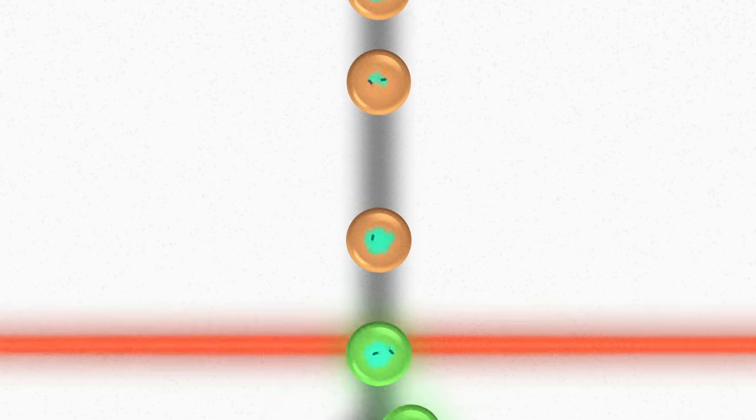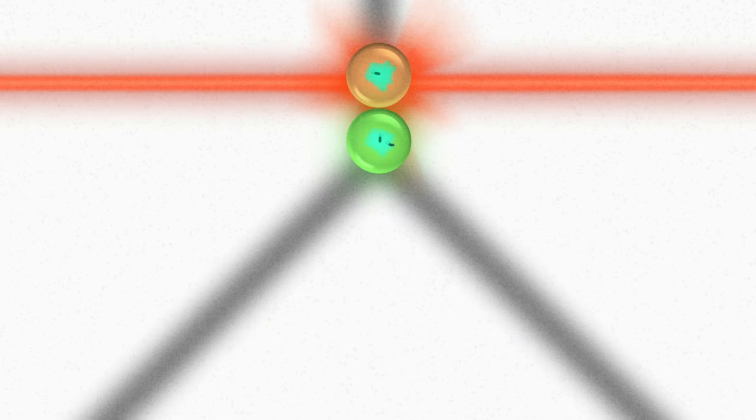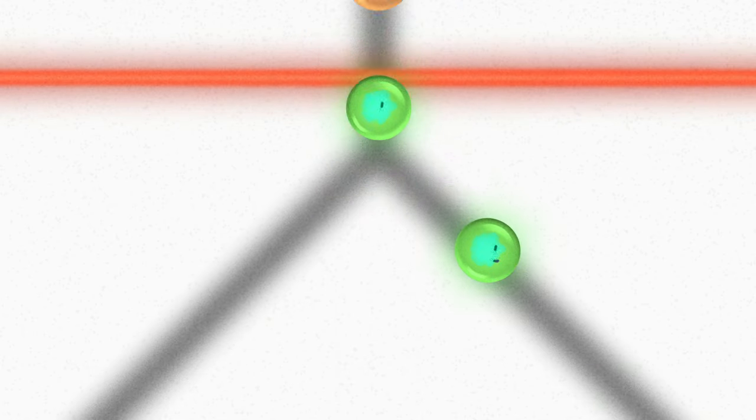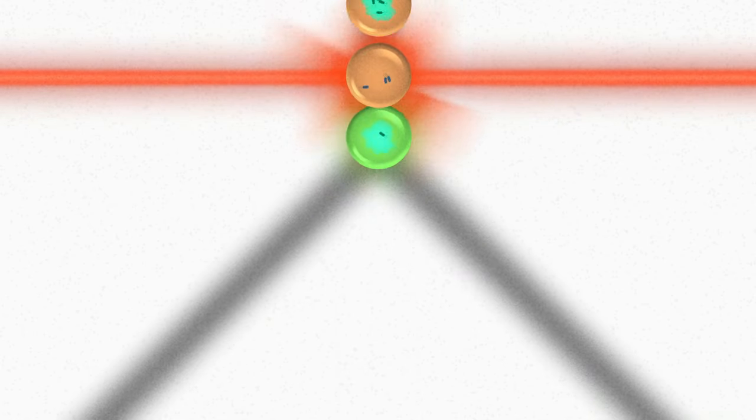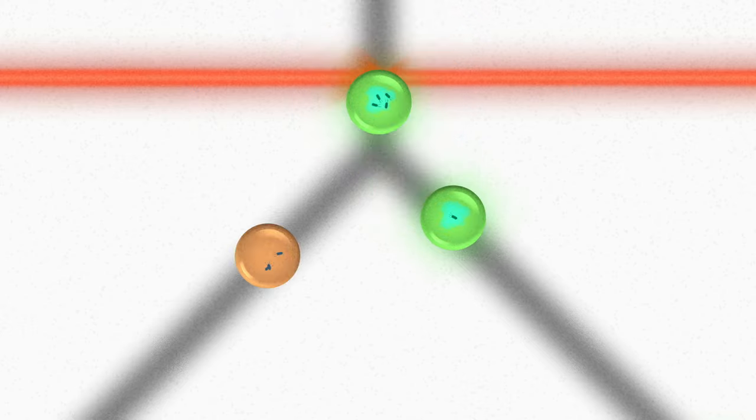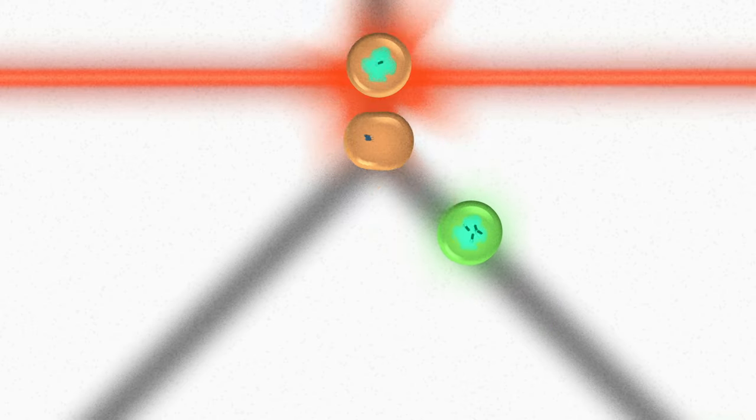After an incubation period, we use lasers to perform a fluorescence measurement on the beads, and then sort them according to the results. From a large initial population, we collect a small number of top performers.